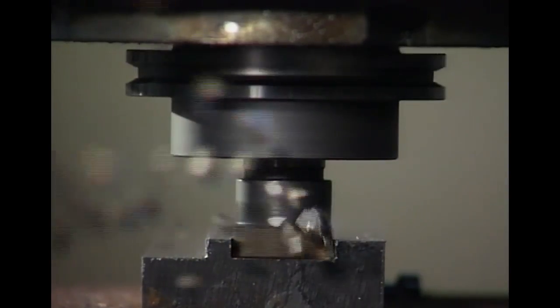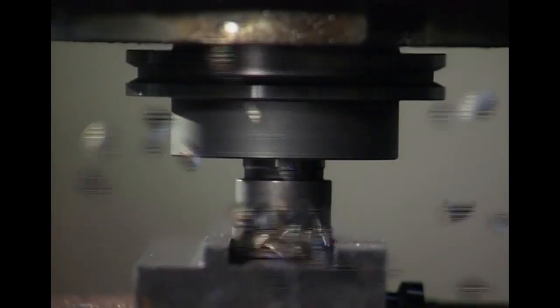As the cutter rotates, each insert edge alternatively enters and leaves the cut, removing a small amount of material in a short discontinuous chip.